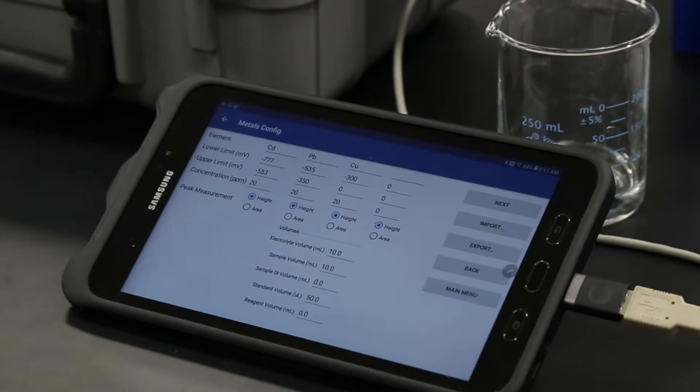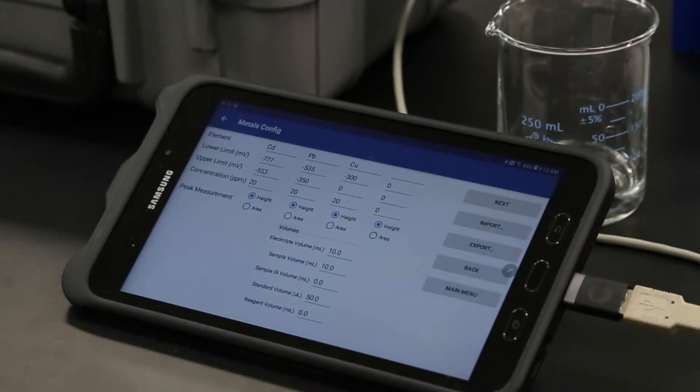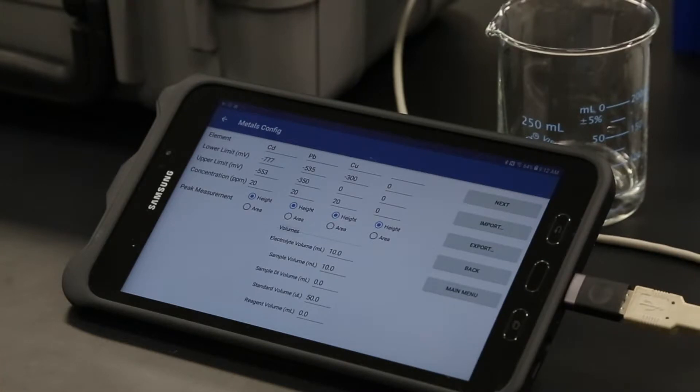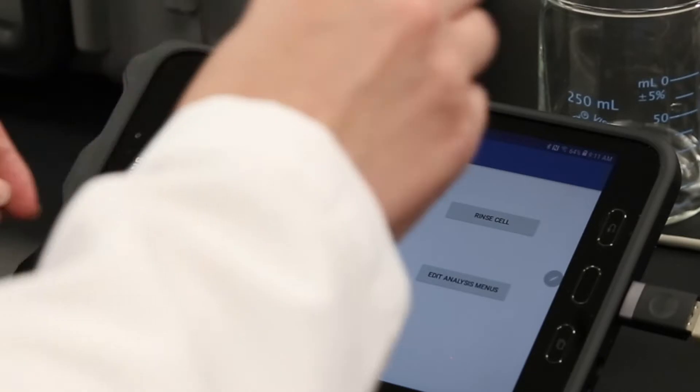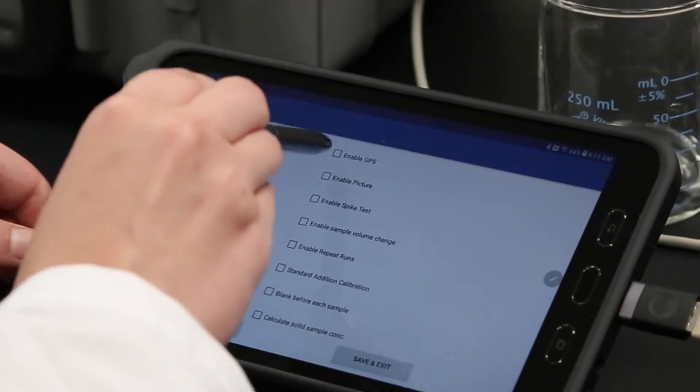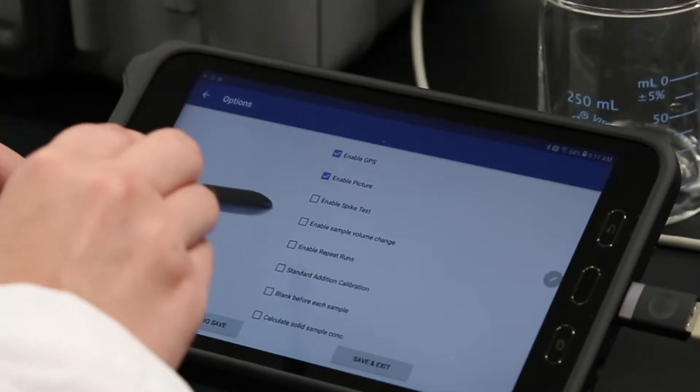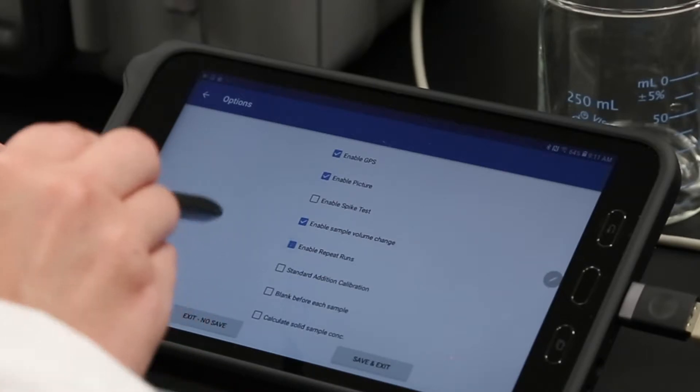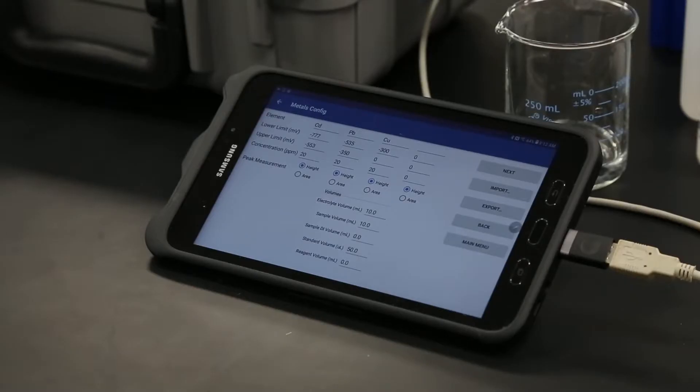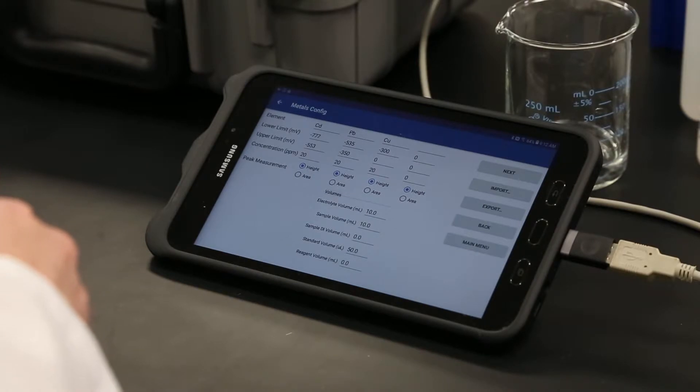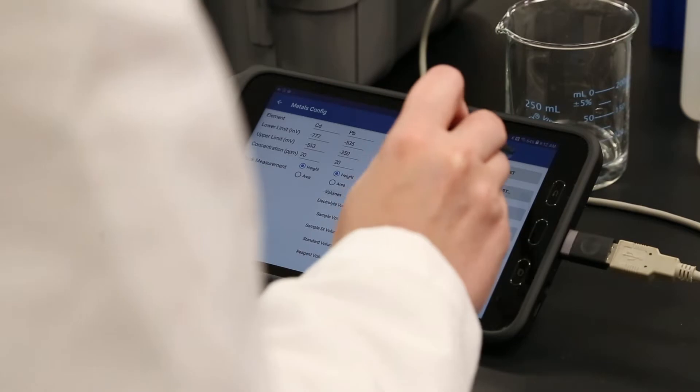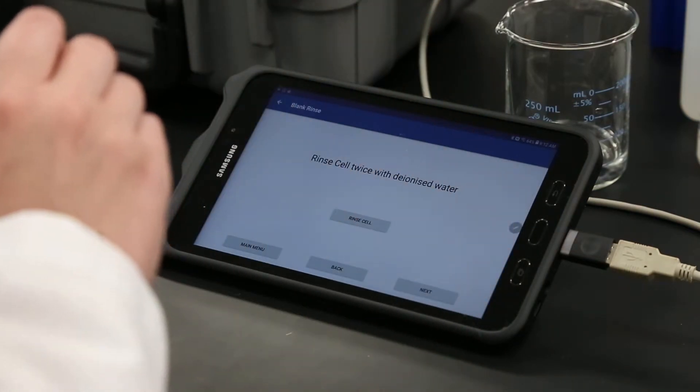To perform a standard comparison analysis, initiate the analysis procedure by selecting the Analyze Sample button from the main page. If the Enable Sample Volume Change option has been selected in the Options page, the Metals Config page will reappear to give the user the opportunity to load different application settings or change any volumes or analyte metal window details. Normally this is not required. Once changes are made, or if they are not required, click Next to initiate the analysis cycle.